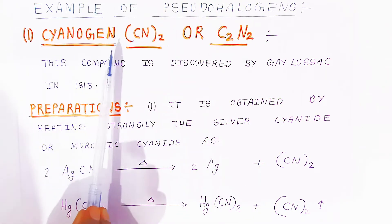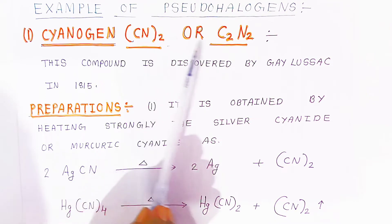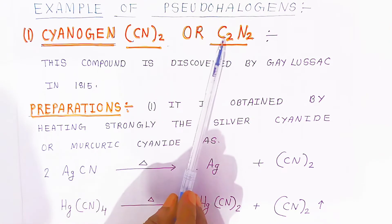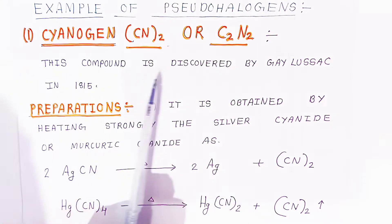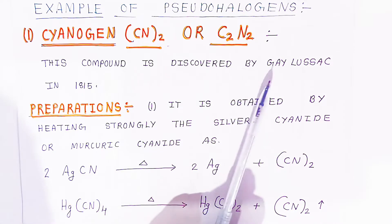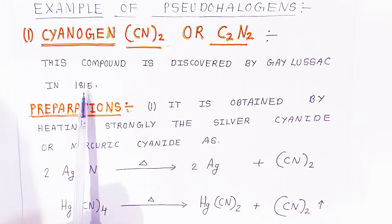The formula of cyanogen is CN twice, or you can also write it as C₂N₂. This compound was discovered by Gay-Lussac in 1815.